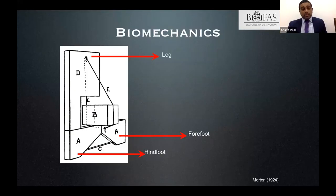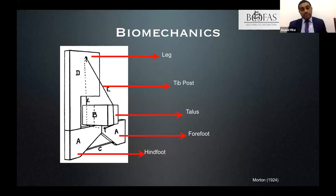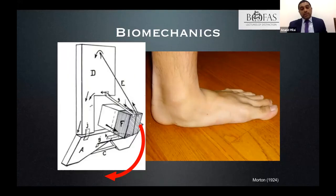To understand the biomechanics, you need to think of the foot and ankle as a mitered hinge — the forefoot and hindfoot attached to each other, the leg connecting through the ankle joint, and the talus balanced at the junction between midfoot and hindfoot, supported by the tibialis posterior tendon. When the tibialis posterior tendon fails, the talus falls forward, causing the heel to evert to accommodate that movement.